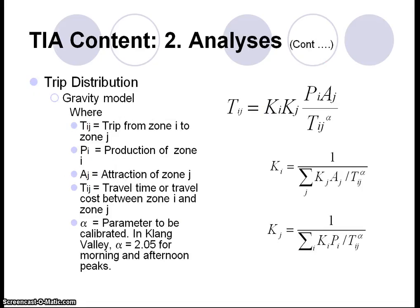We have to distribute this traffic generation because, although we know the total number of productions in the morning, we don't know where these people want to go. So we distribute based on the attractions in the same area using the gravity model. The gravity model is based on the gravity concept we learned in school — we adjust the formula slightly but it still functions like a gravity model.